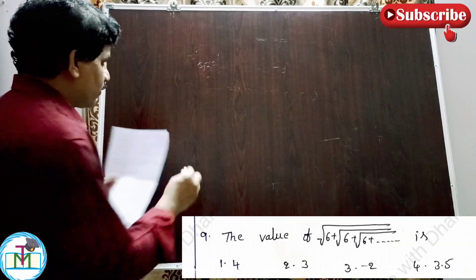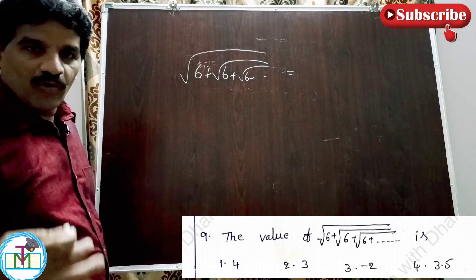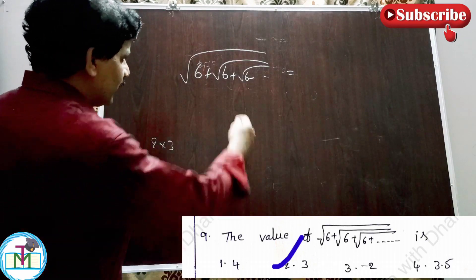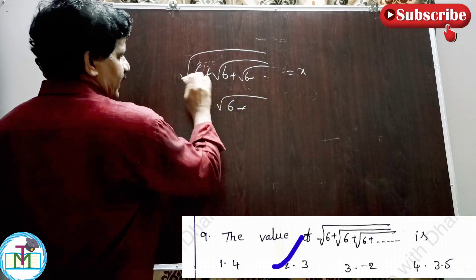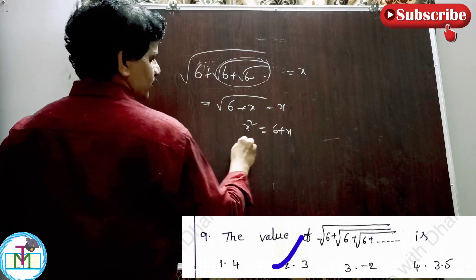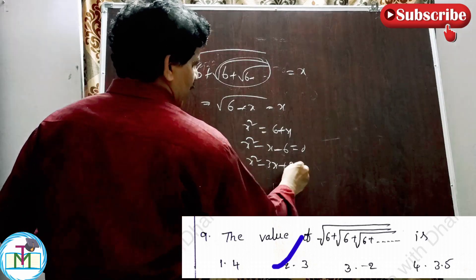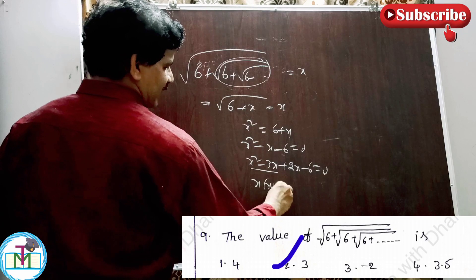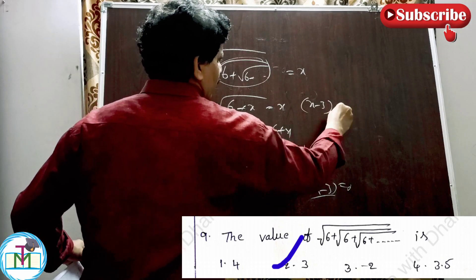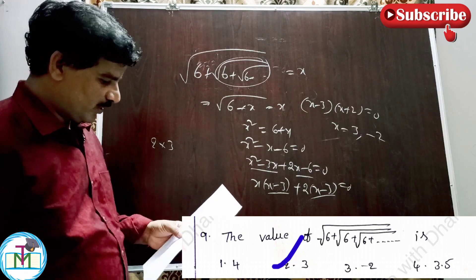Question number 9: The value of √(6 + √(6 + √(6 + ...))) equals how much? Let the expression equal x. Then x = √(6 + x), so squaring both sides: x² = 6 + x, giving x² - x - 6 = 0. Factoring: x² - 3x + 2x - 6 = 0, so (x - 3)(x + 2) = 0. Thus x = 3 or x = -2. Since the value must be positive, x = 3. Option 2, value equals 3, is the right answer.